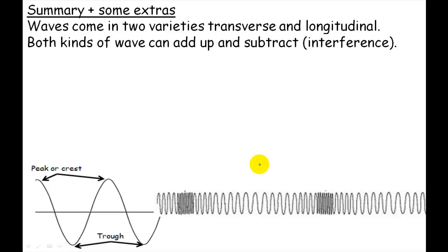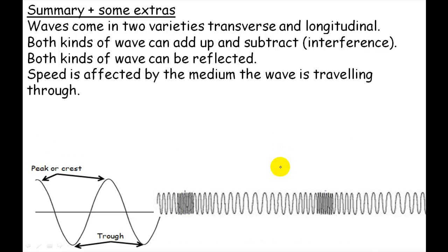Both kinds of waves can add up and subtract, and we call this interference. Both kinds of waves can be reflected. Okay, so speed is affected by the medium the wave is traveling through and nothing else. It's just the medium it's traveling through. You can't have an extra big wave and it will go faster or push the spring harder and it will travel faster. The speed remains constant. It just depends on the medium it's traveling through.